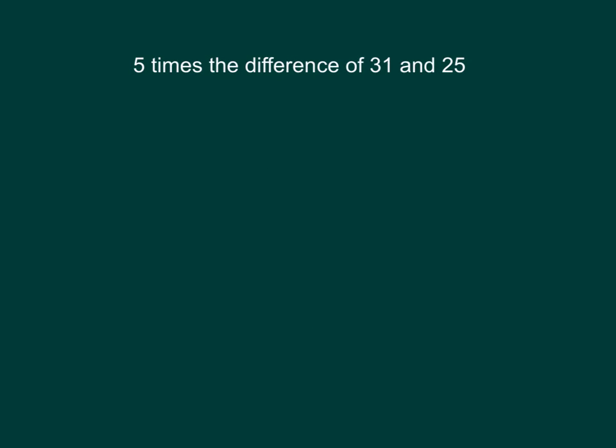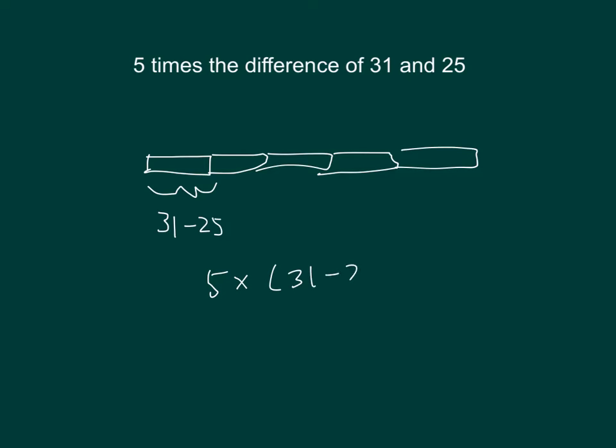Here's another expression: 5 times the difference of 31 and 25. Our bar model would look like this. Each of them is the difference of 31 and 25. That's 31 minus 25. 5 times that difference. So our parentheses come into play again.